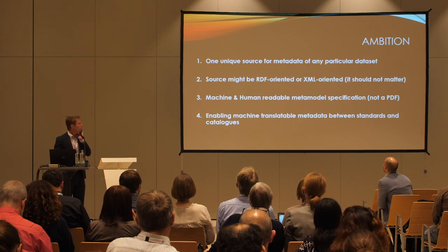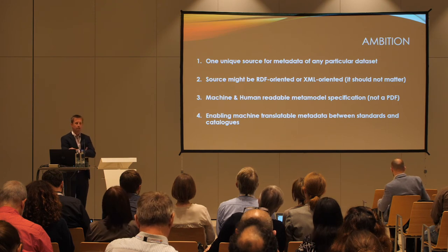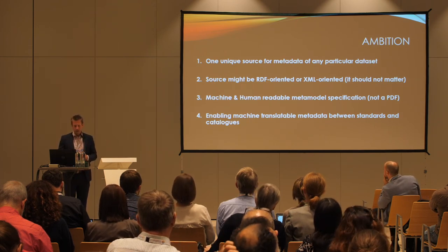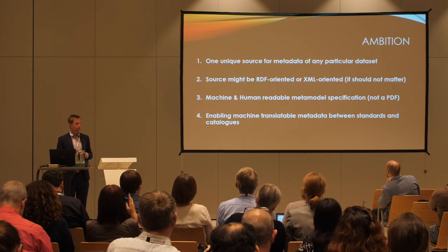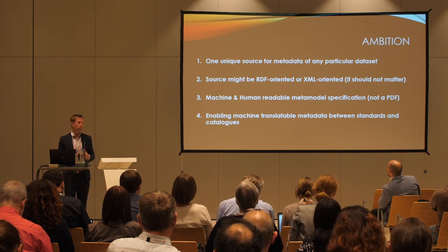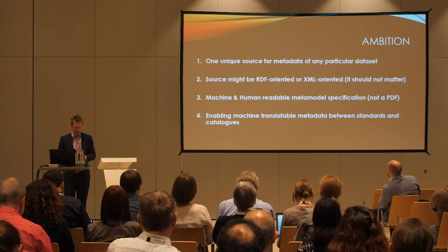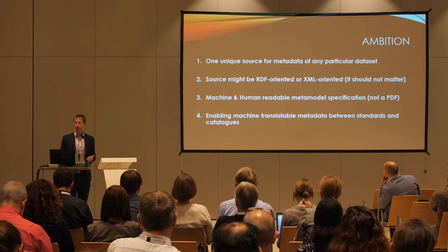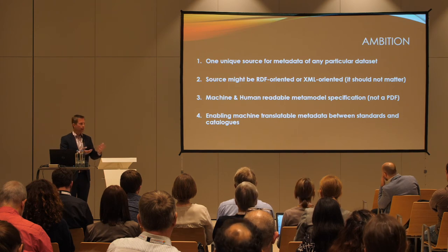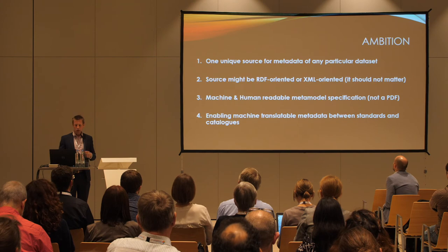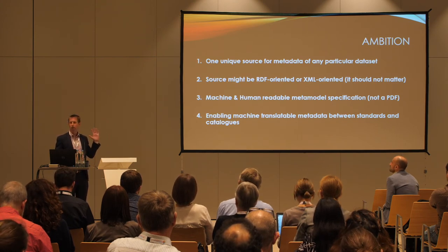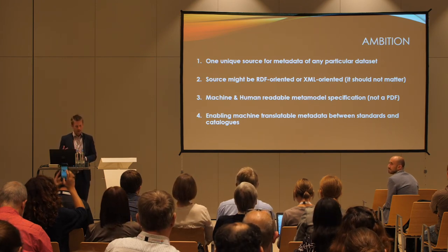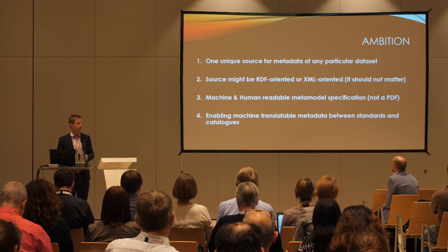The source might be RDF-oriented or XML-oriented — it should not matter. It should be possible to go from one to the other because it's the same information about the same dataset. The meta-model specification should be both machine-readable and human-readable. If it's only human-readable like a PDF, it's very hard to see differences between documents or have interoperability discussions. If we have machine-readable models, we can enable machine-translatable metadata between standards and catalogs.